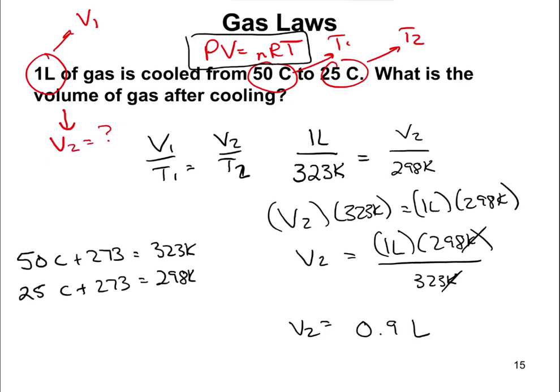Rounding to one significant figure — because the problem started with 1 liter — the answer is 0.9 liters. The calculator gave 0.9226, but with one significant figure, 0.9 liters is the final answer. Make sure your units are correct.